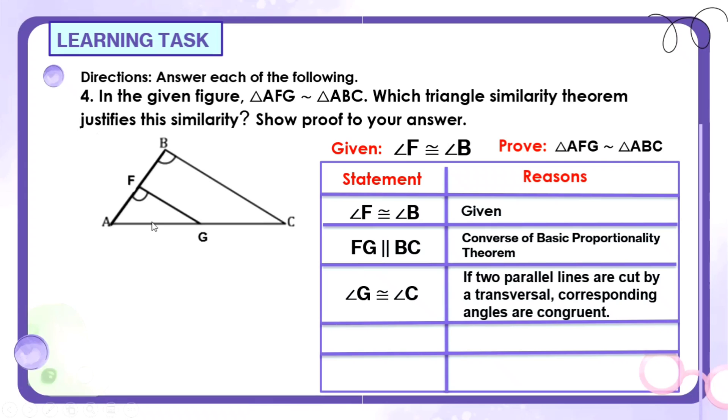Naprove na natin itong angle F and angle B, then angle G and angle C. Ano pa kaya ang pwede natin i-prove? Syempre, huwag natin kalimutan itong nag-iisa pang angle ng triangles natin, which is angle A. And obviously, they are congruent kasi pareho lang sila. Yung dalawang triangle na ito is parehong-pareho sila nung angle A. There's no need to prove that. Ang sabihin na lang natin reason is reflexive property. Now, naprove na natin yung tatlong angles ng ating triangle. Ano sa palagay niyong similarity theorem ang pwede natin magamit? Dahil tatlong angles na yung nagamit natin, we can say that triangle AFG is similar to triangle ABC by AAA similarity theorem. Or kahit dalawang A na lang, AA similarity theorem. Kasi makita niyo naman na naprove natin yung bawat angles niya.